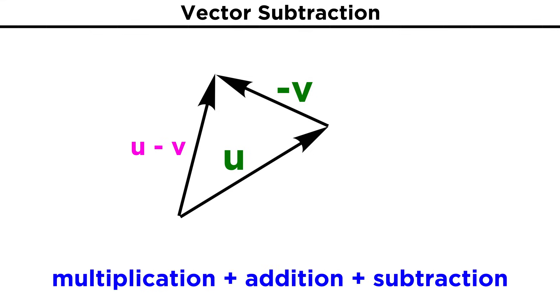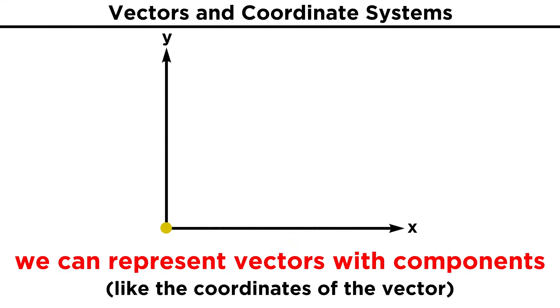We can combine scalar multiplication and vector addition and subtraction to do all kinds of things with vectors, which we will see later. We should also note that vectors can be represented by components, which are kind of like coordinates. Let's say a vector extends from the origin to the point A1, A2. The vector itself can be represented this way, kind of like the point, but with this bracket-like notation rather than parentheses, to distinguish the vector from the ordered pair that represents the point.